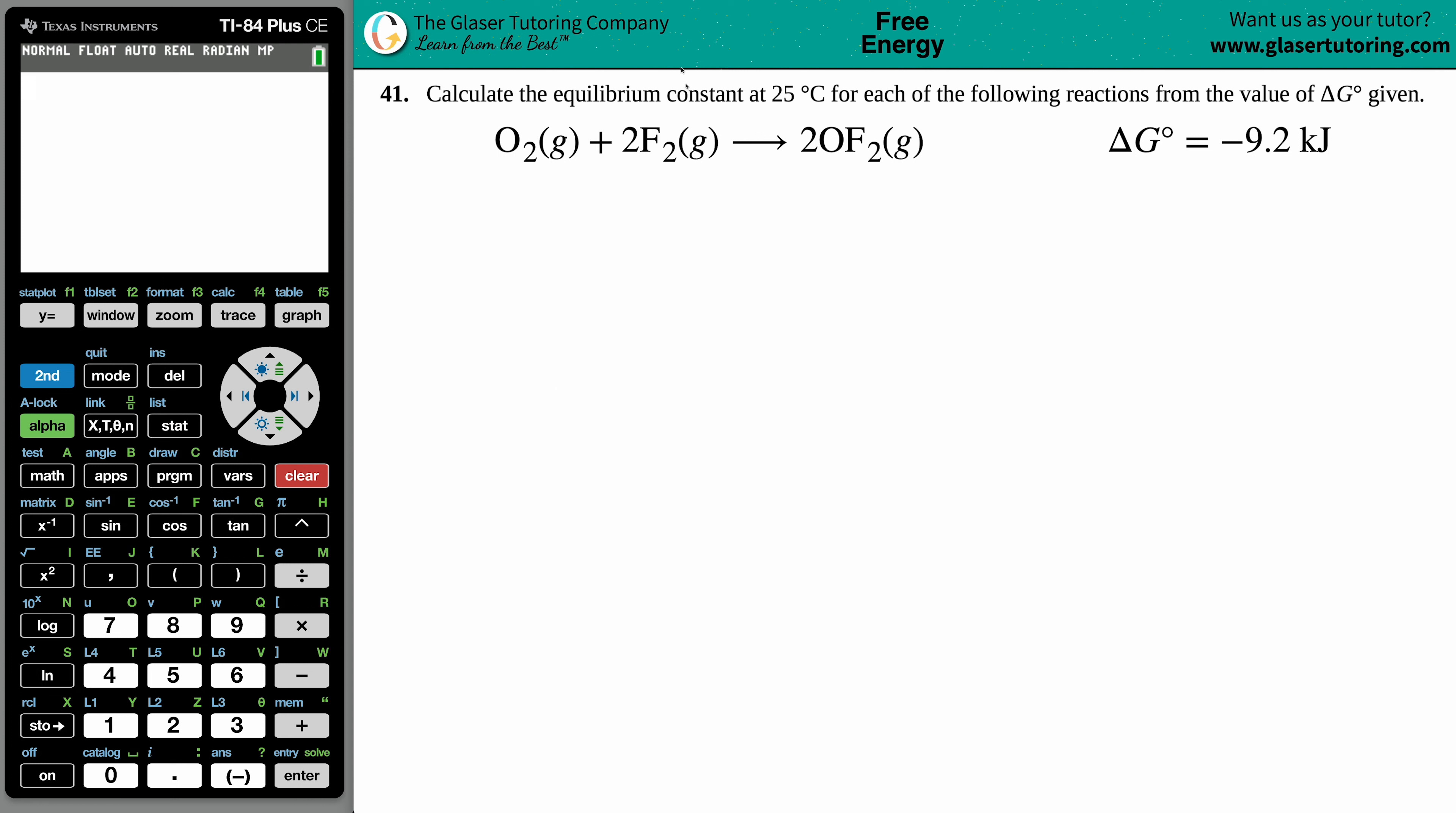Number 41: Calculate the equilibrium constant at 25 degrees Celsius for each of the following reactions from the value of the delta G naught given. Okay, so we have O2 gas plus 2F2 gas which will yield 2OF2 gas, and they give us the delta G, the Gibbs free energy, of negative 9.2 kilojoules.